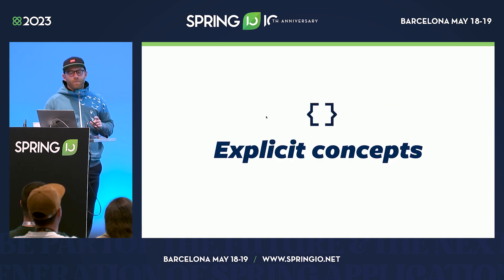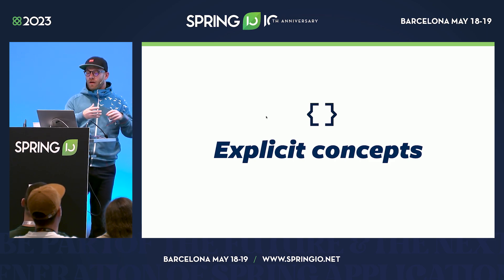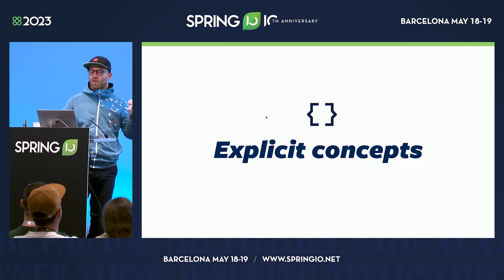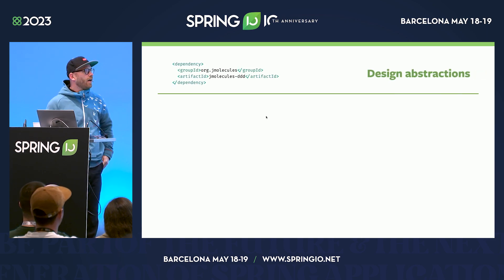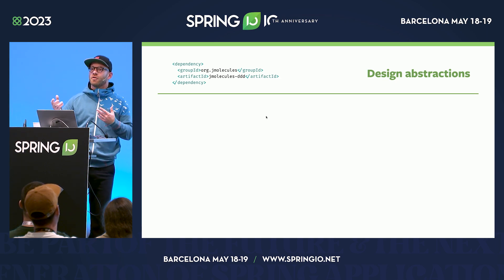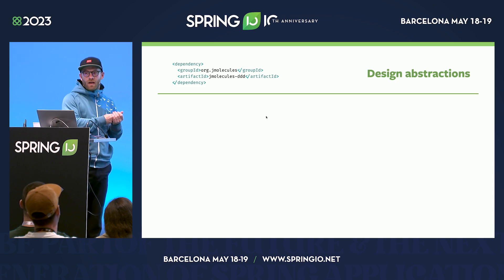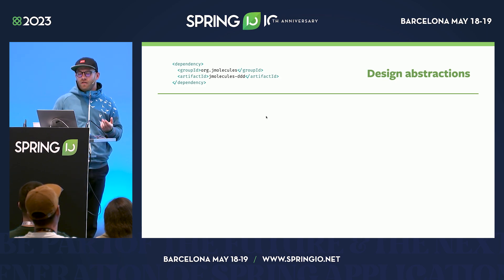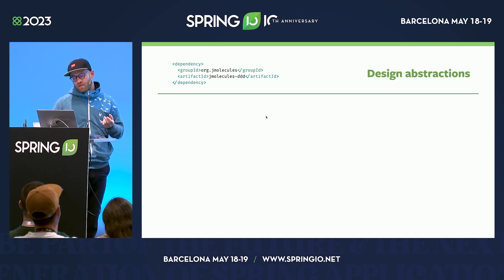To implement that scenario and be able to verify those relationships, we need to make these concepts explicit in our codebase. We do that by adding a tiny library to our Maven dependencies called JMolecules-DDD. The JMolecules project is a set of libraries — you pick and choose which architectural style you're using. The DDD one ships with both annotations and interfaces that allow you to express these concepts.